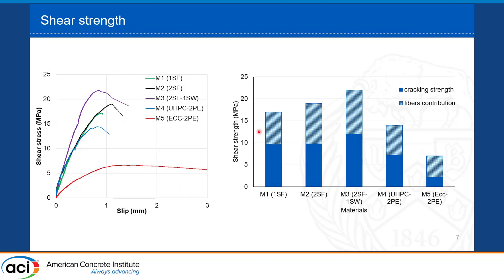After testing, the results show that the first four mixes, M1 to M4, have much higher strength than ECC, as expected. All of them showed nonlinear behavior until reaching the peak, then failed in a brittle manner shortly after. ECC showed much more ductile behavior with a gradual strength loss after the peak. The shear strength is composed of two contributions: the matrix component until cracking, and the fiber contribution after cracking providing bridging stress.